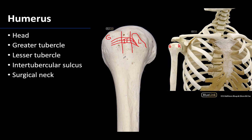Just distal to the tubercles is a relatively thin portion of the humerus, and this region is called the surgical neck of the humerus. It is a named region due to the relatively higher frequency of fractures that occur here. If you have a humeral fracture, it's not uncommon for it to occur at this surgical neck region.